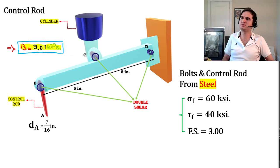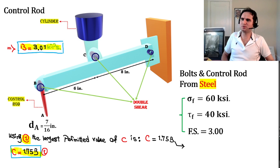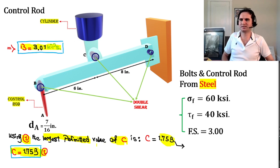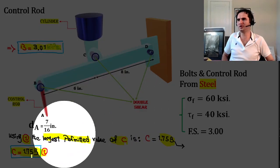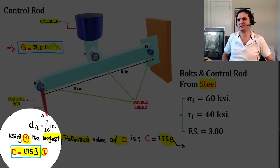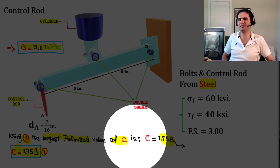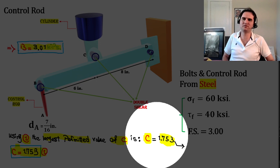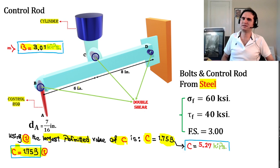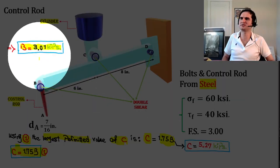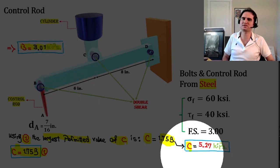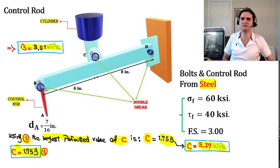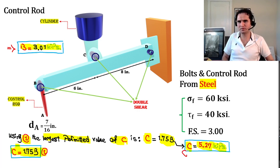Knowing F_B = 3.01 kips and using Equation 1, the largest permitted value of C due to the control rod constraint is: F_C = 1.75 × F_B = 1.75 × 3.01 = 5.27 kips. We call this C1.